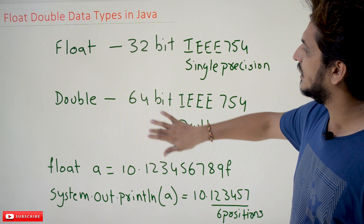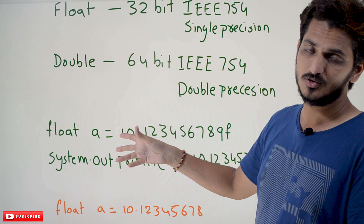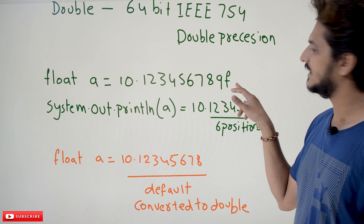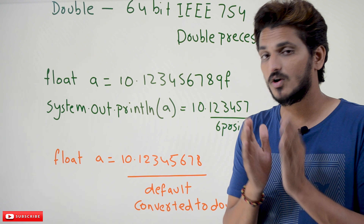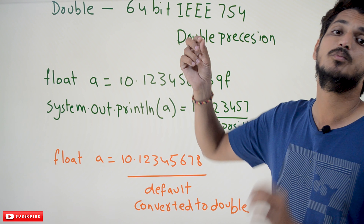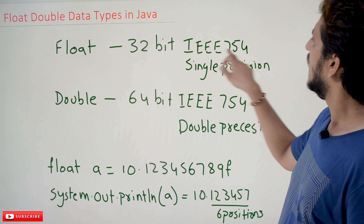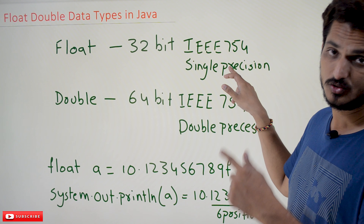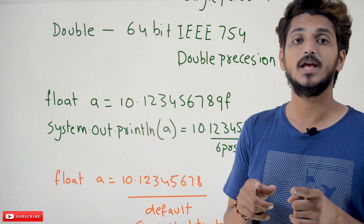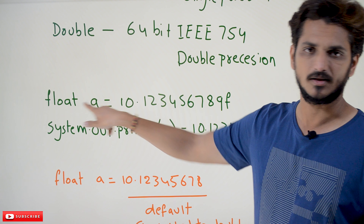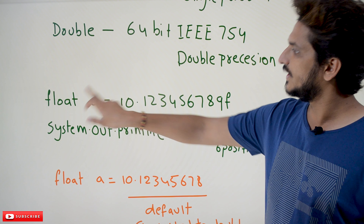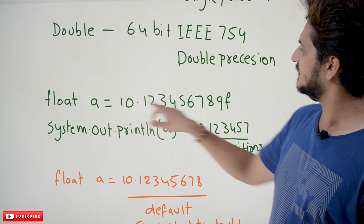Now, how do you define a floating point variable and assign a value to it? The syntax is: float A = 10.123456789F. At the end you have to place F. The Java compiler will only consider this a float if you place F — it then converts this number using IEEE 754 single precision. If you forget to place F, by default it is going to treat it as double, which is not the suitable type. So to use float, you must place F at the end.